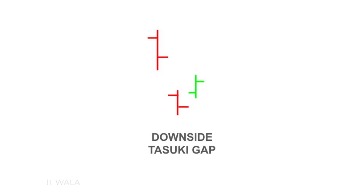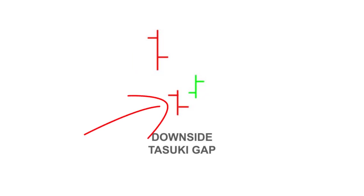In the Downside Tasuki Gap Pattern, we have three candles. The first candle is a big bearish candle. The second candle is also bearish and is smaller than the first candle in size. Also, this second candle should be a gap-down candle. That means there should be a gap between the close value of the first candle and the high value of the second candle.